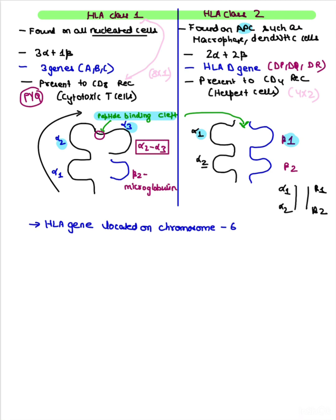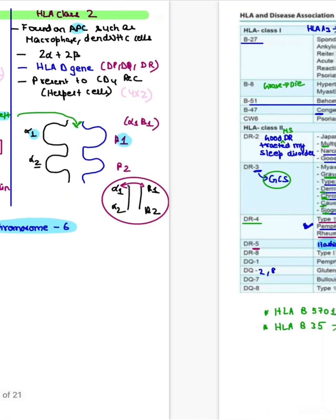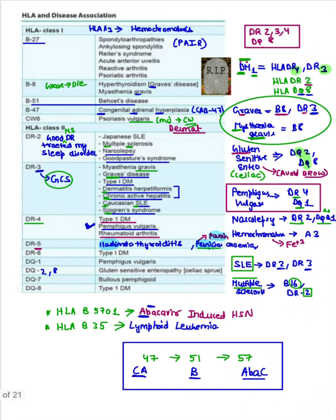If you see class 2, remember this is arranged in a linear fashion like we write the number 2. Here is the binding cleft between alpha 1 and beta 1. This is very important. HLA gene is located on chromosome number 6. HLA stands for Human Leukocyte Antigen.